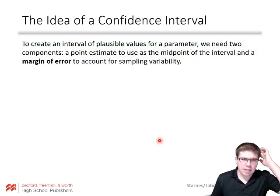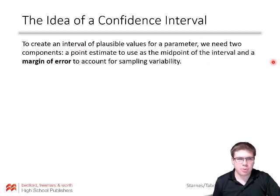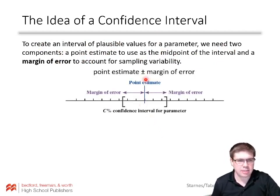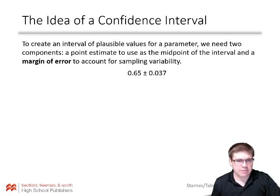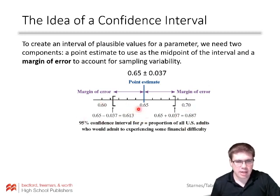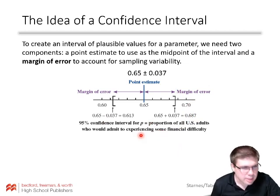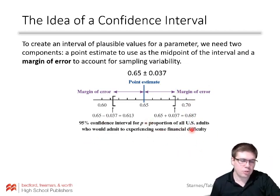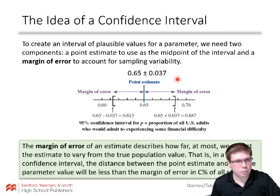To create an interval of plausible values for a parameter, we need two components: a point estimate to use as the midpoint of the interval, and a margin of error to account for sampling variability. We start with our point estimate in the middle and go plus or minus a margin of error to give us bounds for our confidence interval. For instance, a point estimate of 0.65 plus or minus a margin of error of 0.037 gives a lower bound and an upper bound. We can then make the confidence statement: we are 95% confident that the interval from 0.613 to 0.687 contains the actual parameter.